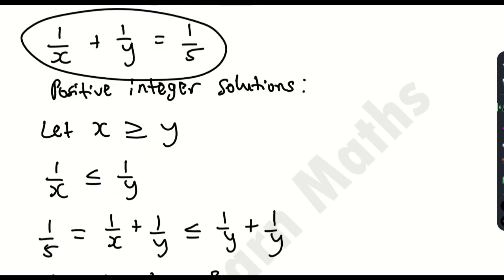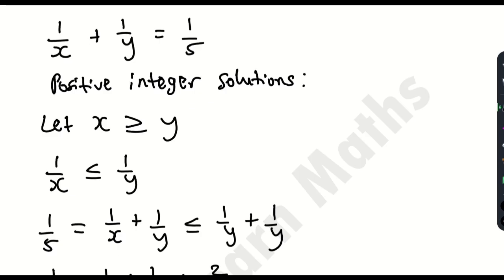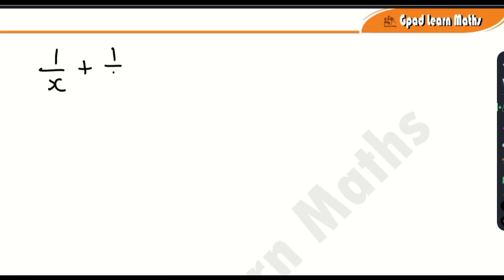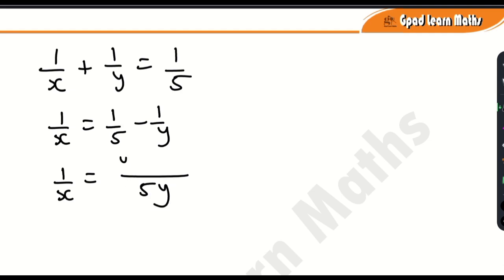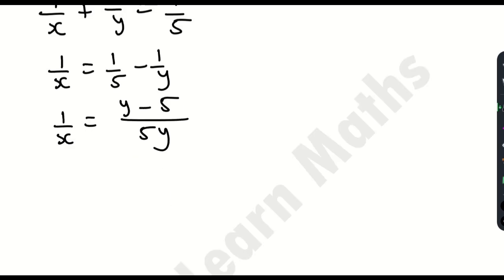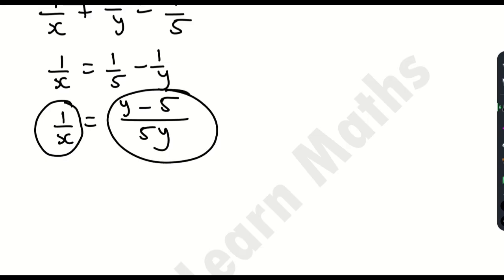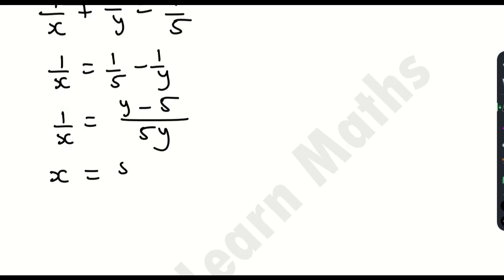Now let's go back to the original equation and make x the subject of the formula. So 1/x + 1/y = 1/5. Transposing 1/y to the right hand side: 1/x = 1/5 − 1/y. The LCM of 5 and y is 5y, giving 1/x = (y − 5) / 5y. Taking the reciprocal, x = 5y / (y − 5).